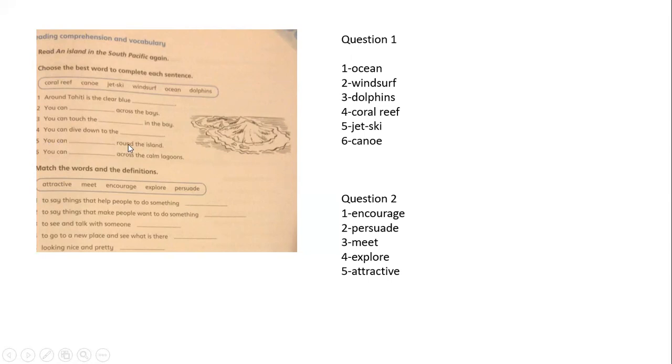Here we have words with their definitions. We are going to write the correct word next to the correct definition. We have: to persuade means to make people want to do something. To meet means to see and to talk with someone. To go to a new place and see what is there: explore. Looking nice and pretty: attractive.